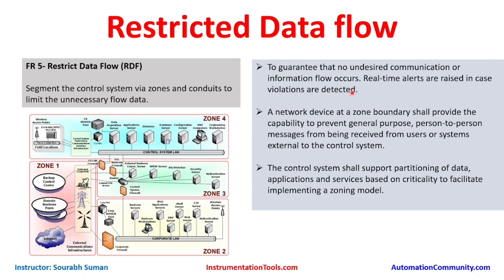A network device at zone boundaries provides the capability to prevent general-purpose person-to-person messages from being received from users or systems external to the control system. Basically, a firewall at the zone boundary acts as a boundary protection device. Between each zone there are multiple firewalls, and these firewalls act as zone protection devices.